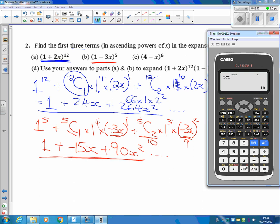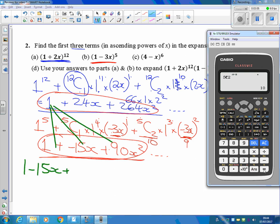I'm going to go on to part D now, I'll come back to part C, because part D says I want to multiply all of this by all of this. And so what I'm going to do, I'm going to do 1 times each of those things, that's okay, isn't it? 1 minus 15x plus 90x squareds.